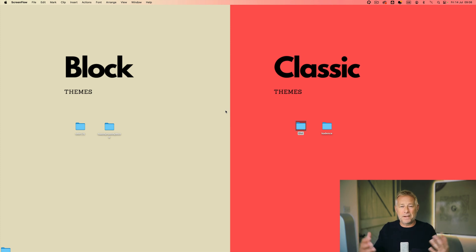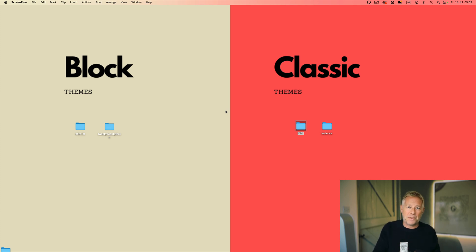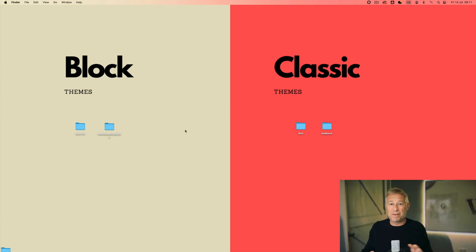Because block themes are fully integrated into the WordPress core, they have an inbuilt advantage over classic themes: a simplified architecture. Here's an analogy: a classic theme has to bring along the TV and send the signal, whereas a block theme can just send the signal because the TV is part of WordPress core. Because of that, block themes are much simpler to build and maintain, and they're typically much more lightweight. To illustrate this, I've got four themes here: two block themes (Twenty Twenty-Three and Oli) and two classic themes (Divi and Cadence).